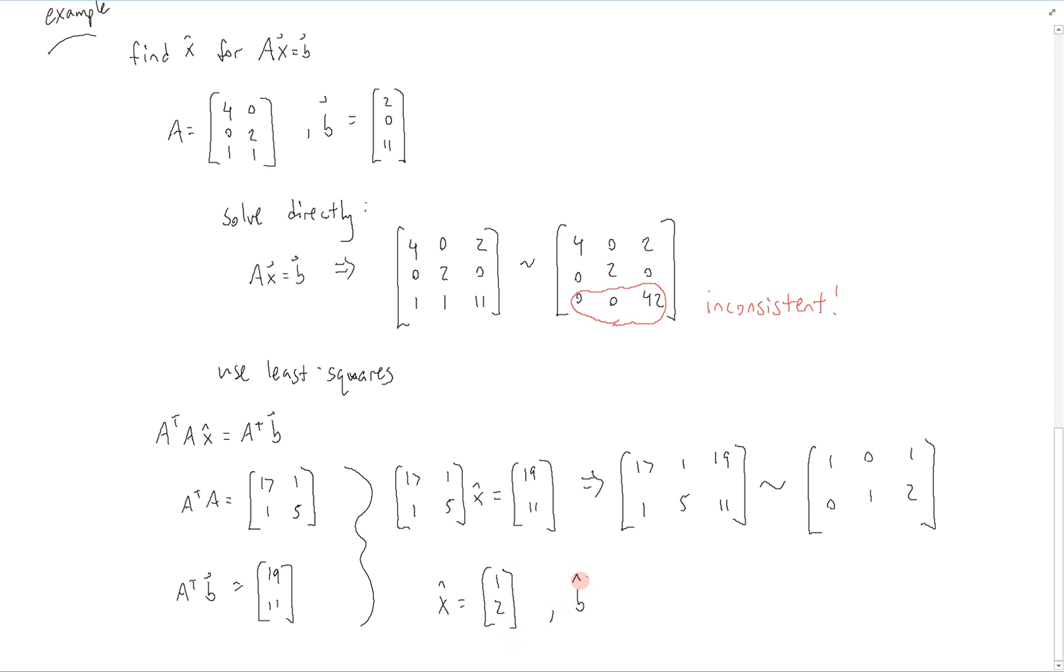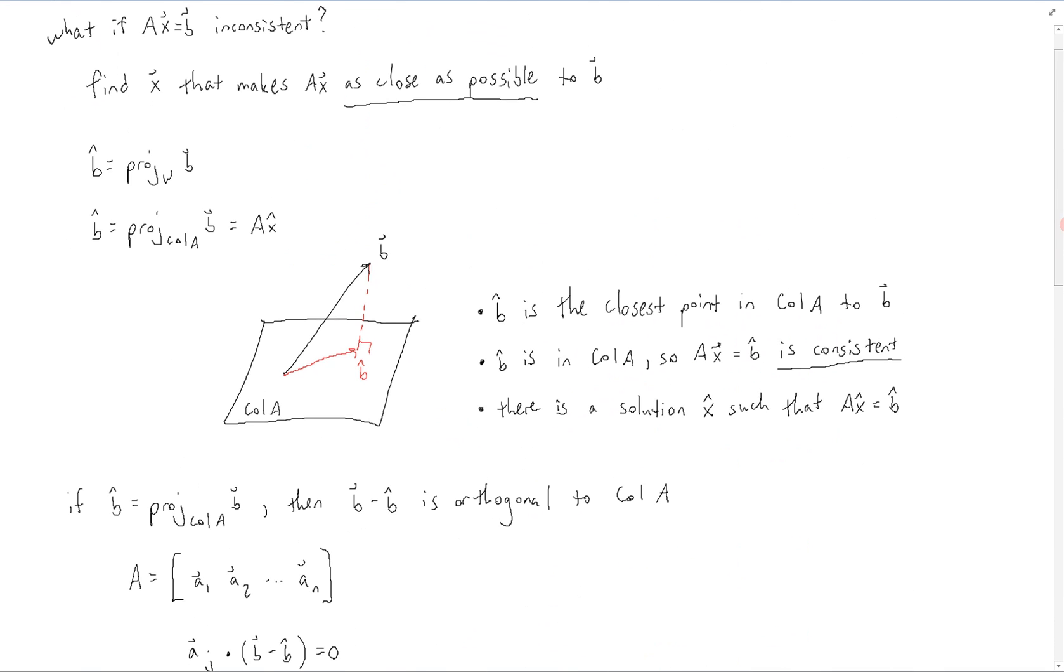And additionally, b hat is equal to ax hat. So we can compute that. And that's going to be 4, 4, 3. And so x hat is the best solution to the system of equations ax equals b, where b hat is that closest point within the column space of a to the actual vector b as we saw over here.